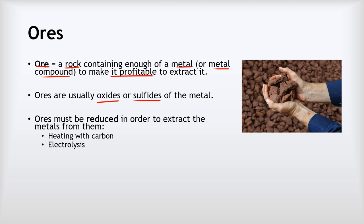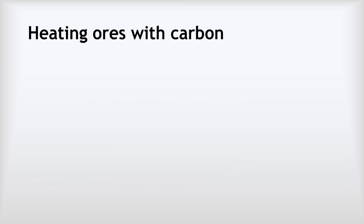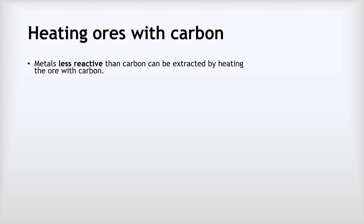To get the metal out of the ore we must reduce it — remove the oxygen or return electrons to the metal atoms. We can do that by heating with carbon or by using electrolysis. The least reactive metals, such as silver and gold, are often found in their native state — existing as elements rather than compounds. Gold can be seen as pure patches within ore, or found as nuggets. Metals found in their native state do not need reducing because they're already in elemental form.